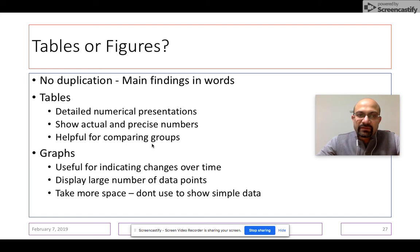What about graphs? So graphs are generally used for indicating changes over time. Tables, like we said, are best for comparing groups. However, graphs are best for indicating changes which are occurring over time in the population. If you have a large number of data points that you want to display, best use graphs.